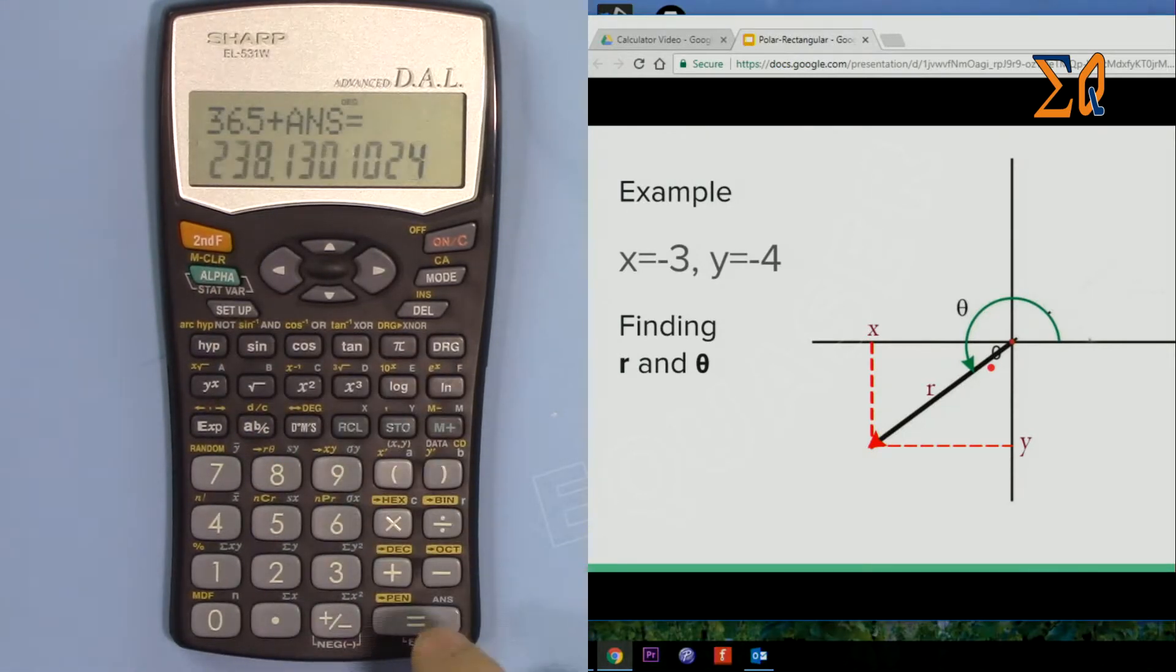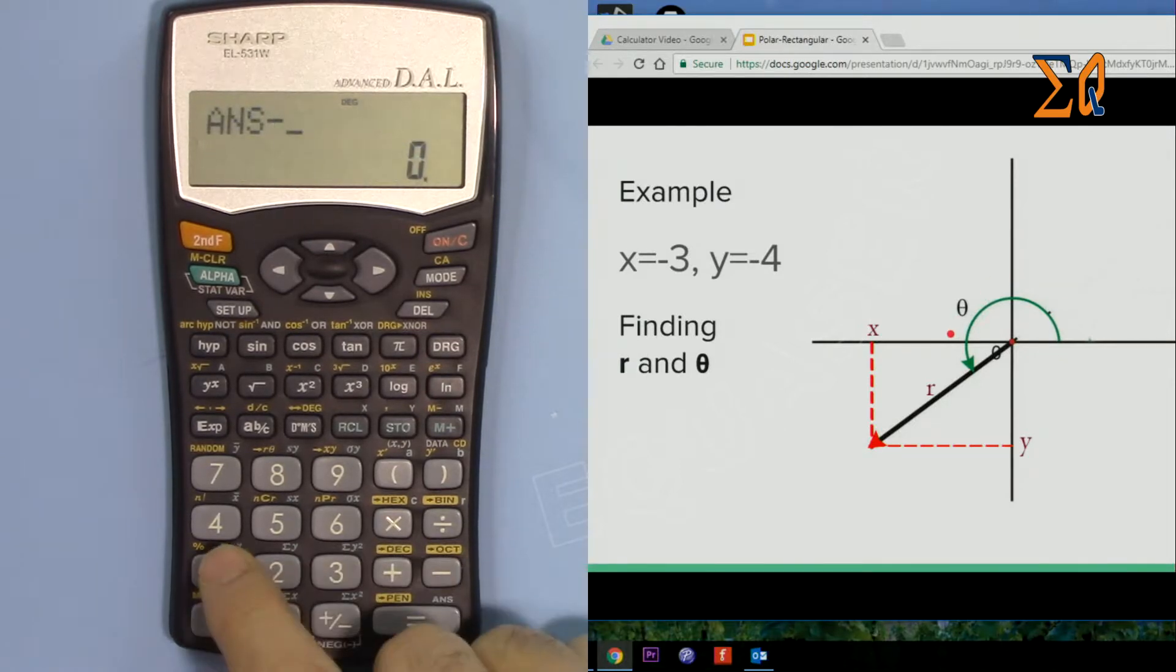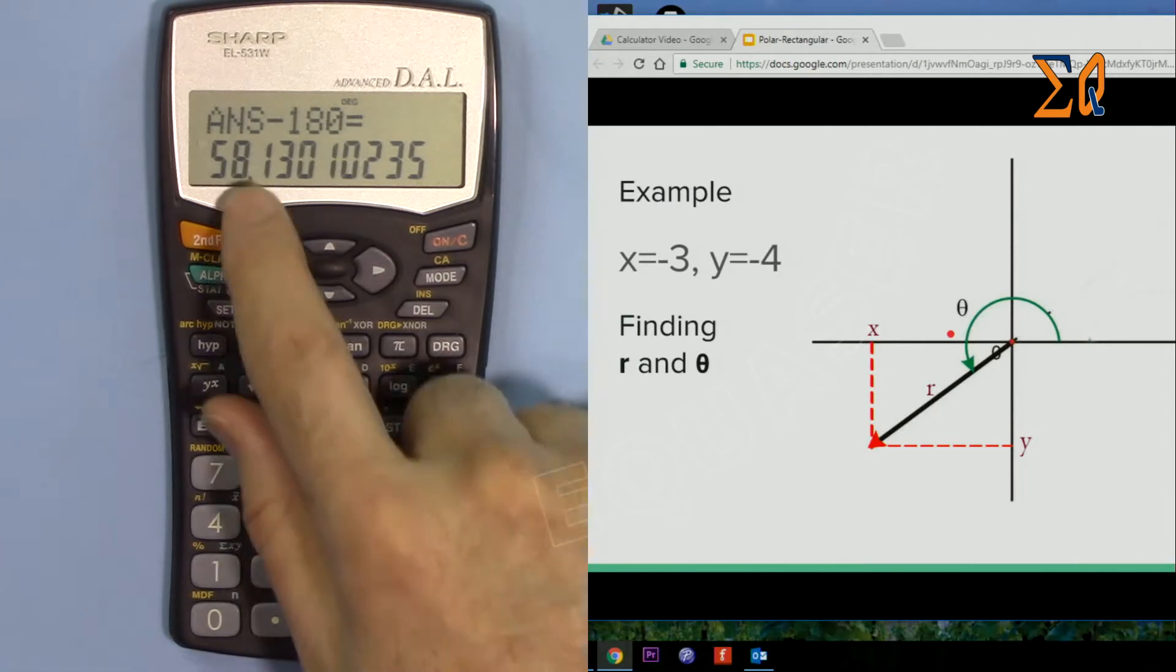So this is the angle from here. But if you just want the angle from here to here, just subtract 180 from there. So minus 180, it will give you 58.1 degrees, that angle.